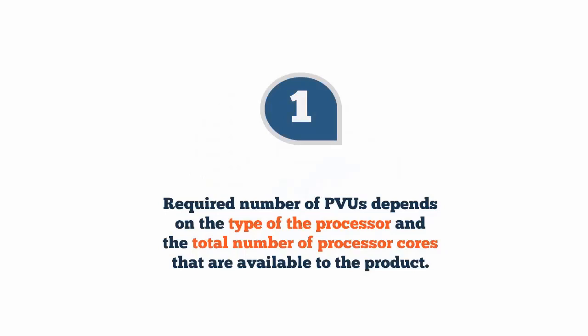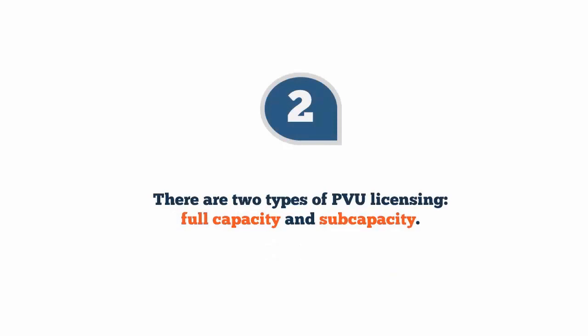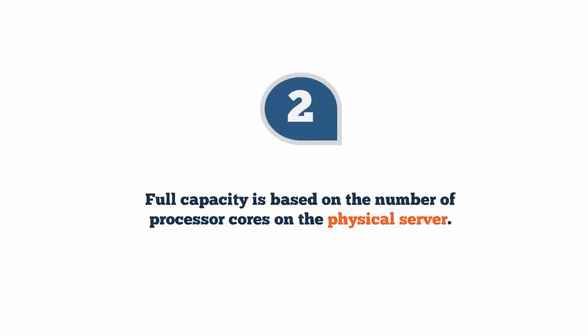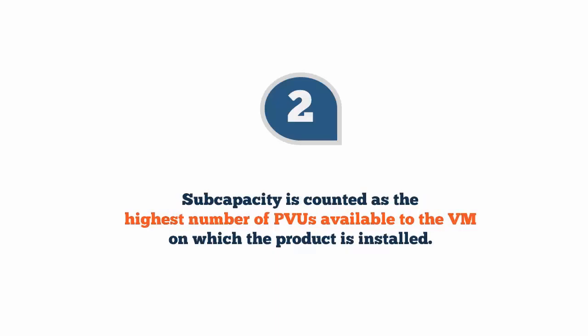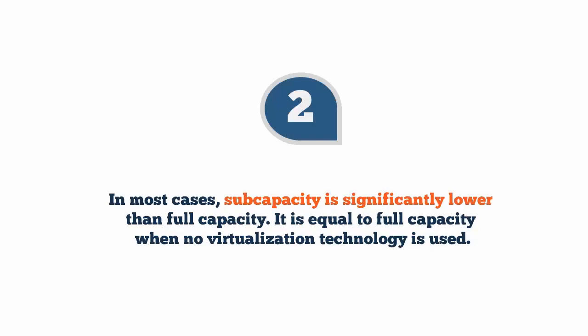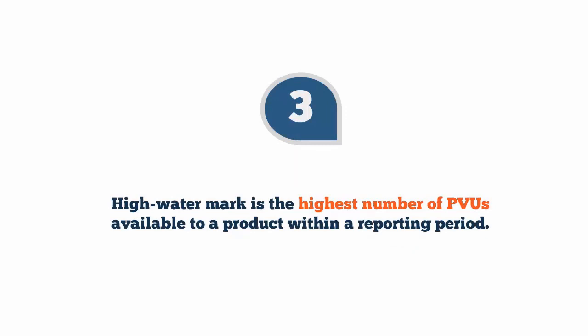Here is the takeaway. 1. The number of required PVUs depends on the type of the processor available on the server where the product is installed, and the total number of processor cores that are available to the product. 2. There are two types of PVU licensing: full capacity and sub-capacity. Full capacity is based on the number of processor cores on the physical server on which the product is installed. Sub-capacity is counted as the highest number of PVUs that are available to the VM on which the product is installed. In most cases, sub-capacity is significantly lower than full capacity. It is equal to full capacity when no virtualization technology is used, for example when the product is installed on desktops. 3. The high watermark is the highest number of PVUs available to a product within a reporting period. It is the value for which you should purchase licenses.